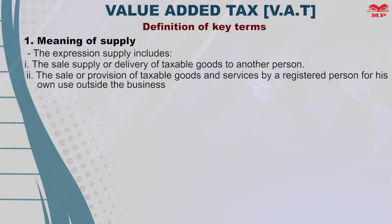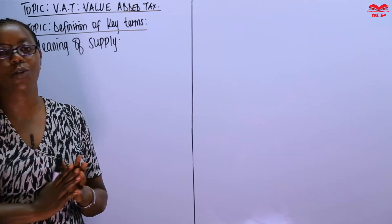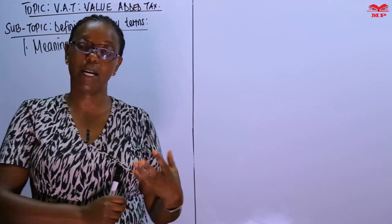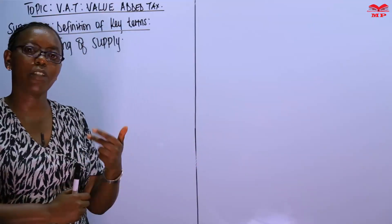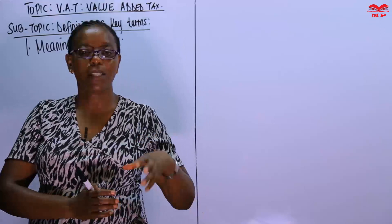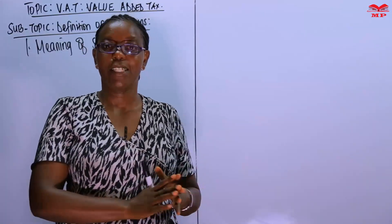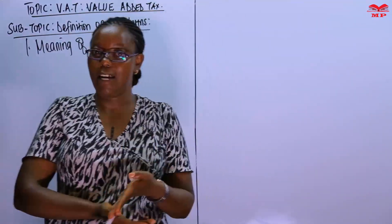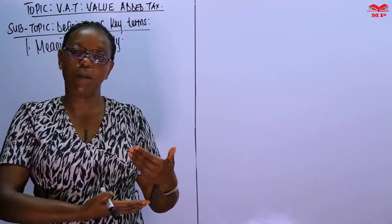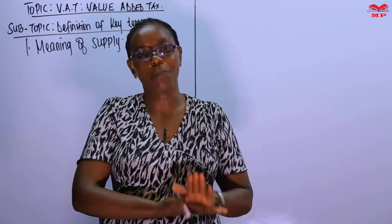Two, the sale or provision of taxable goods or services by a registered person for his own use outside the business. That second definition — providing goods or services to yourself outside the business — is what in accounting would be called drawings. Every time you make drawings of taxable goods, it is deemed that you have supplied and sold to yourself, which is consistent with the separate entity concept: the owner and the business are separate entities.